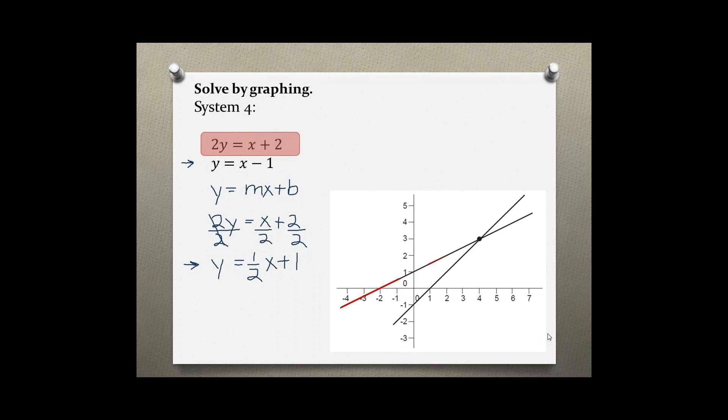Going back to our graph, we have our first equation and its corresponding line, our second equation, its corresponding line, and the crossing at the point 4, 3. So this system has one solution, and the solution is the point 4, 3.